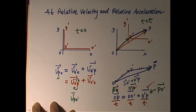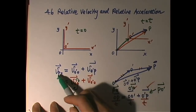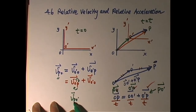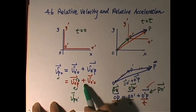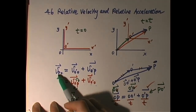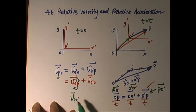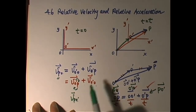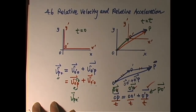So now what do we get? We get p with respect to o equals p with respect to o prime plus o prime with respect to o. That means the apple's motion with respect to the ground equals the apple's motion with respect to the plane, plus the plane's motion with respect to the ground.